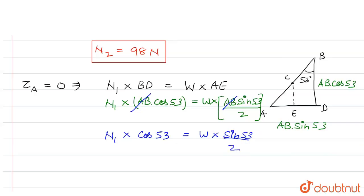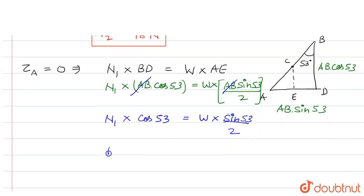Now cos 53 is 3 by 5 equals W, which is mg, times sin 53, which is 4 by 5, and we already have 2 here.